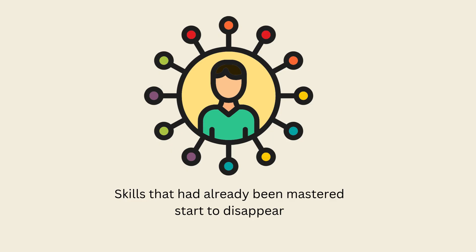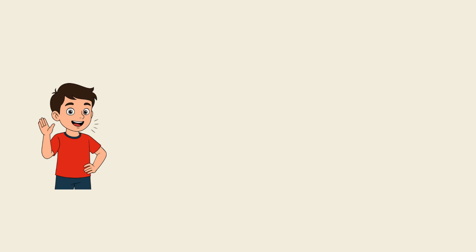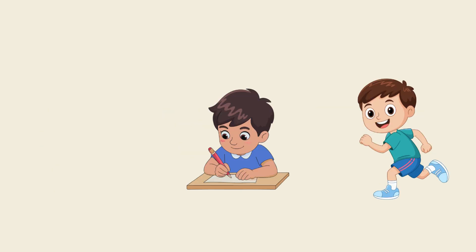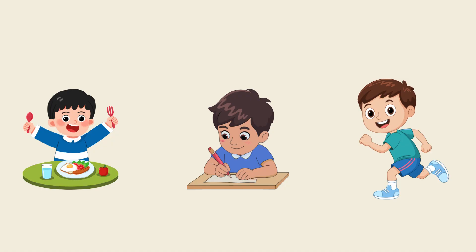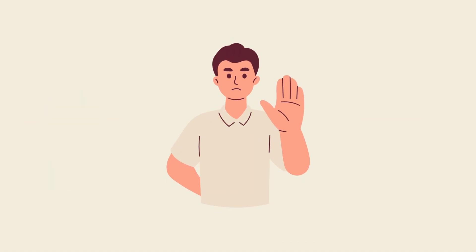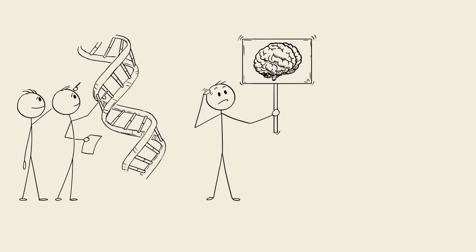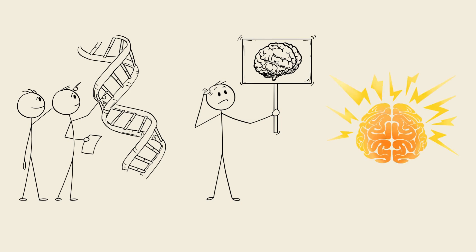Skills that had already been mastered start to disappear. A child who was speaking in full sentences may suddenly lose speech. A toilet-trained child may regress. Social engagement fades, and motor skills like running, drawing, or feeding themselves become difficult or vanish entirely. It's not a small setback, but a profound, often permanent regression. The cause is still unknown — some researchers suspect genetic mutations, brain abnormalities, or neurological disruptions, but no clear explanation has been found.